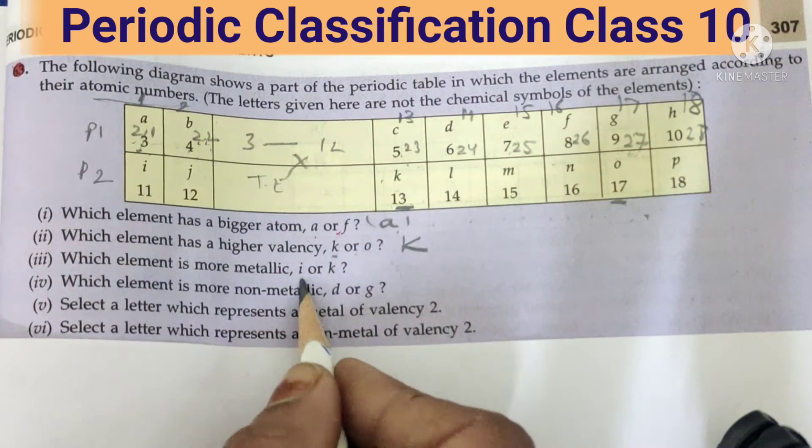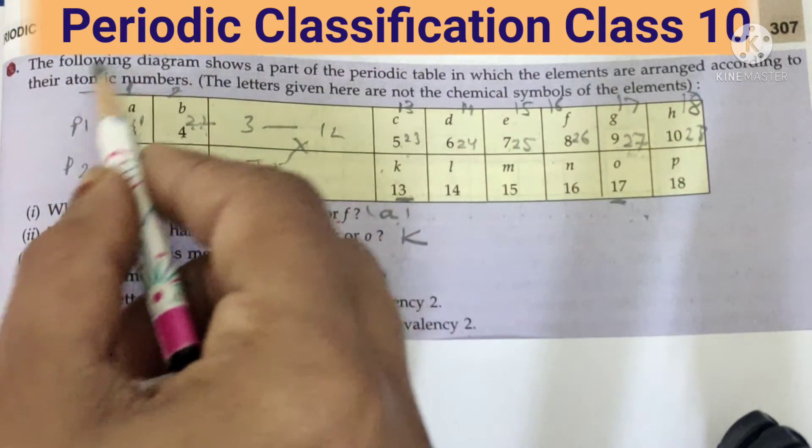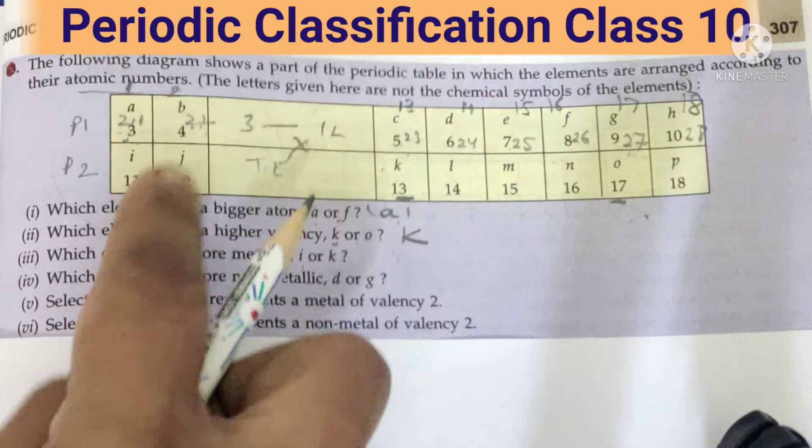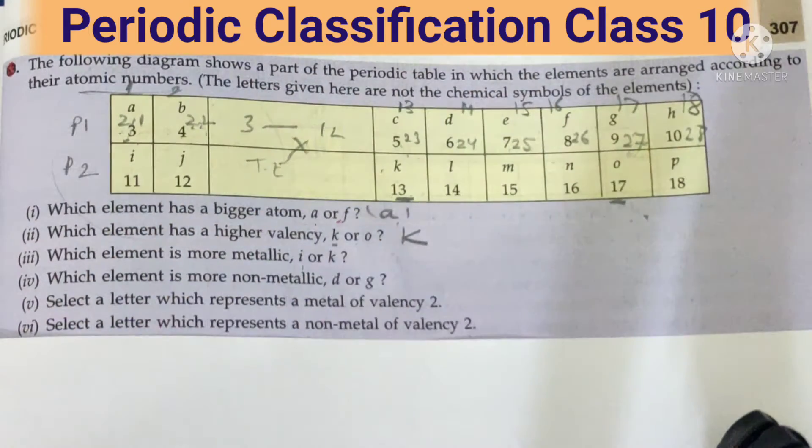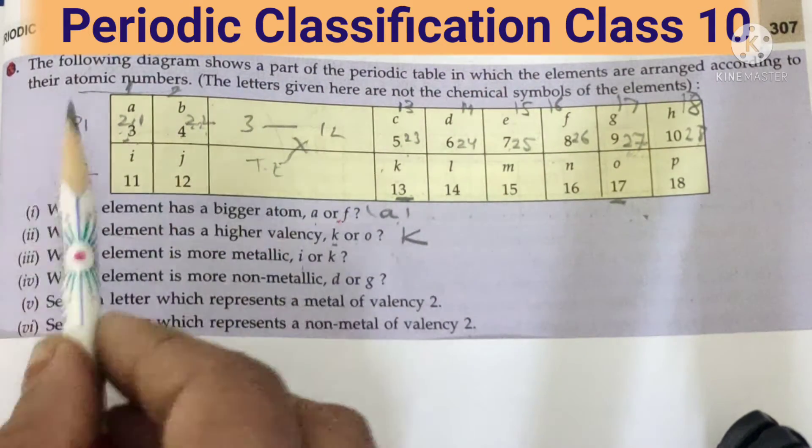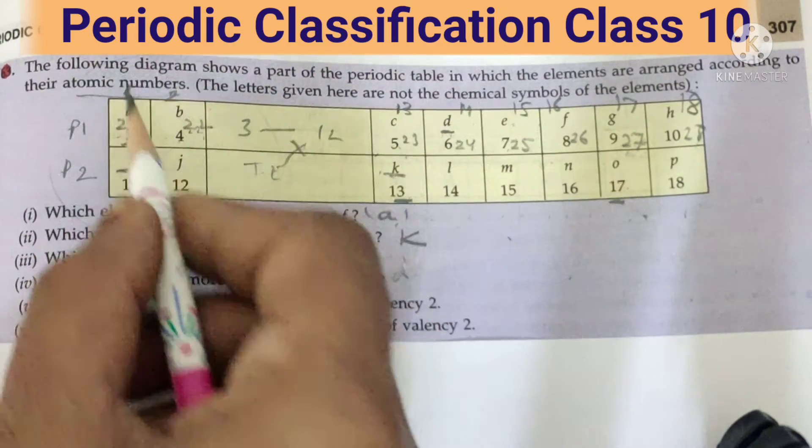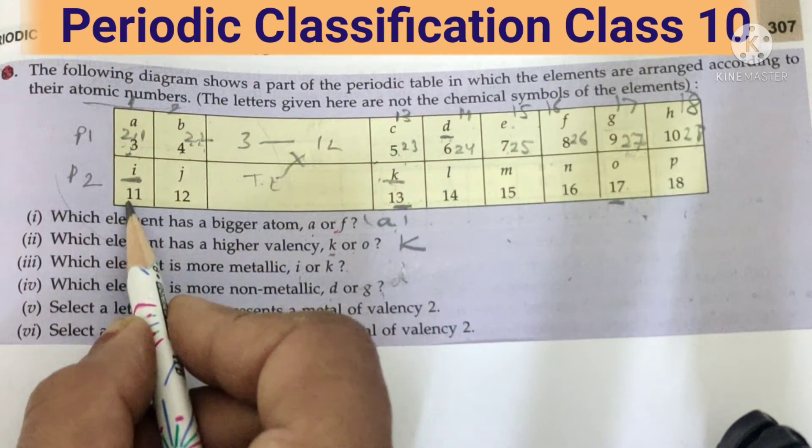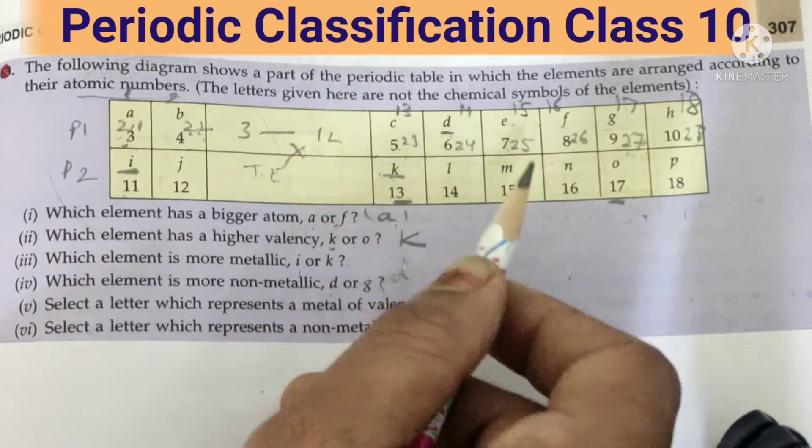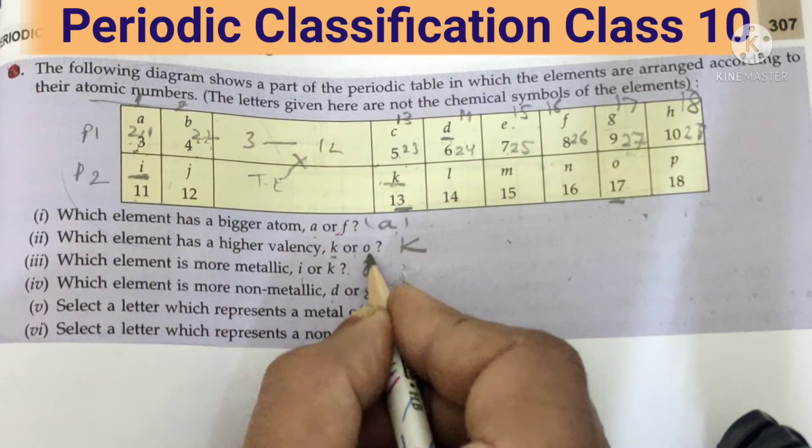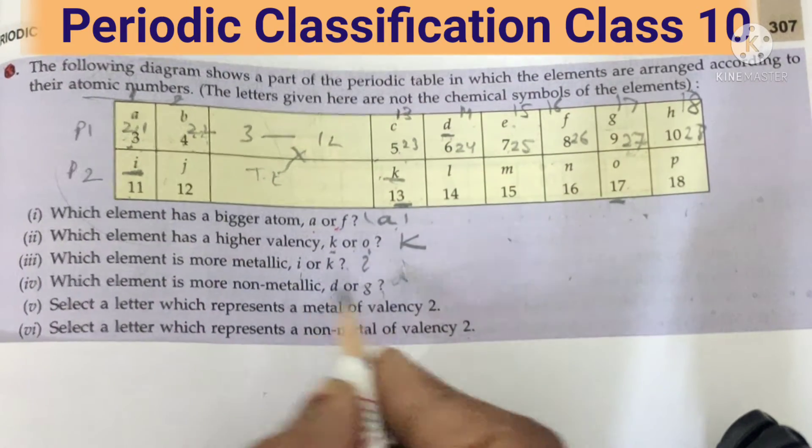Which element is more metallic? You know that periodic table, right side of the metal is all the metals, left side of the metal is all the non-metals. So if they are towards the right side, they are more metallic. So I is more metallic. Why? This side all metals are there, so my answer is I.